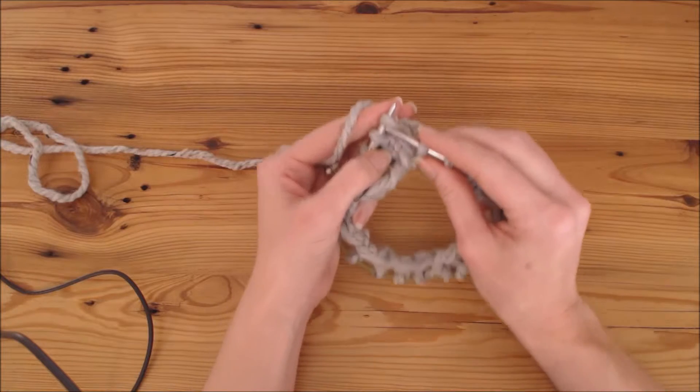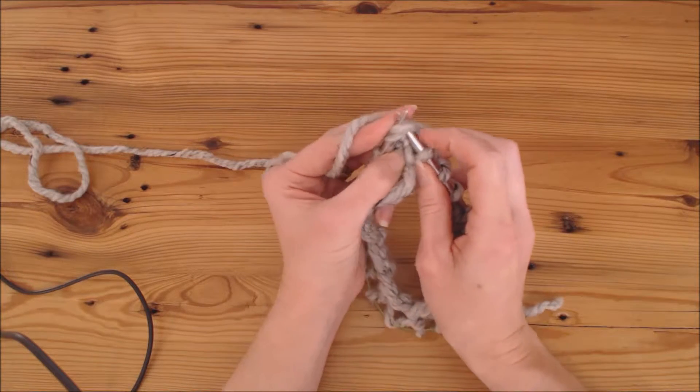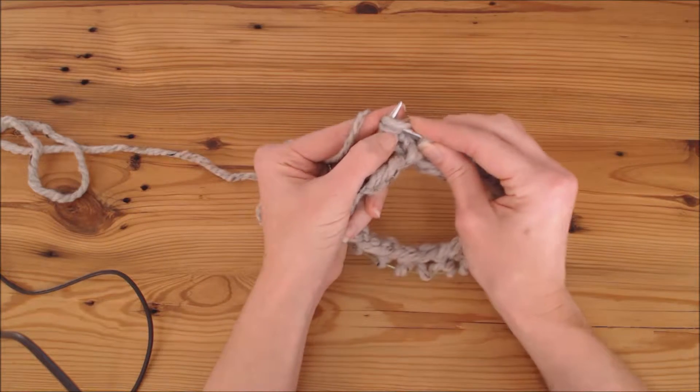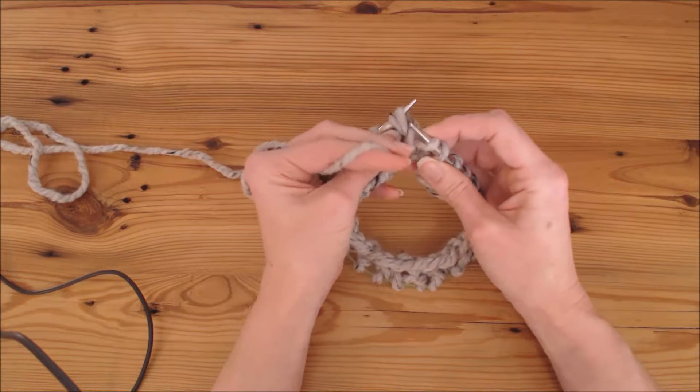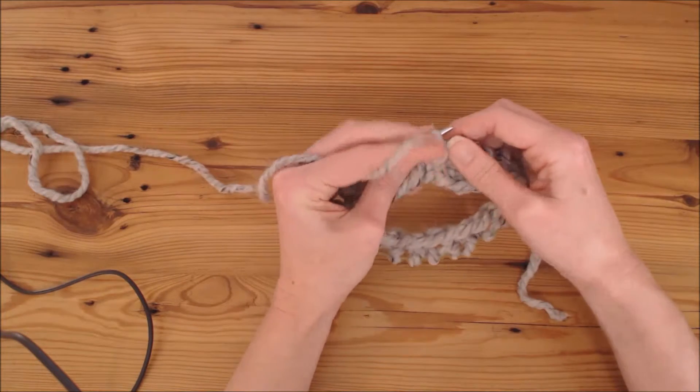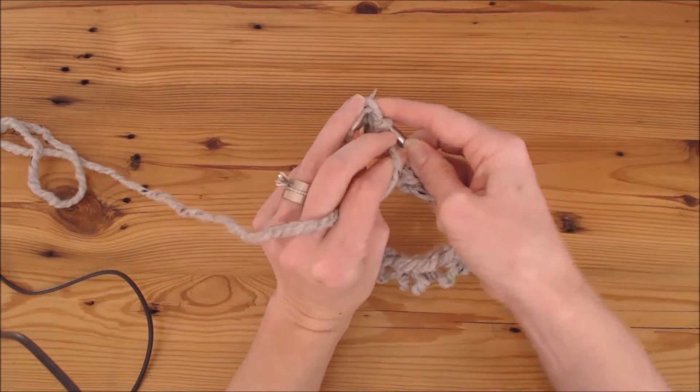So I have two stitches here, and I'm going to knit them together. So I knit those two together, but without slipping them off, I'm going to bring my yarn to the front and purl those two stitches together.